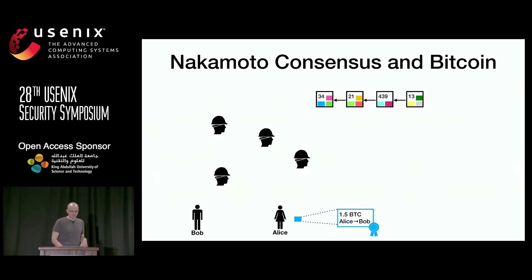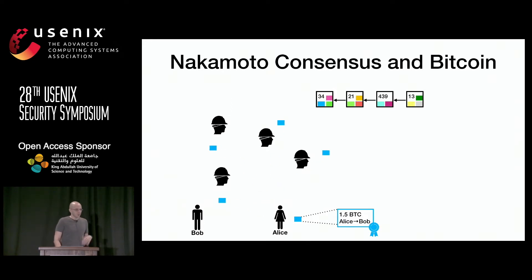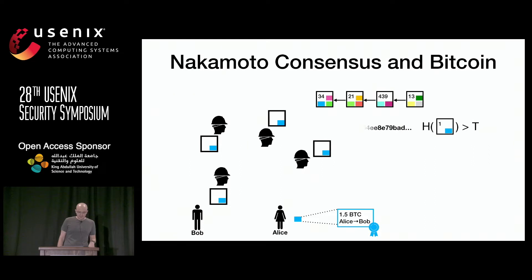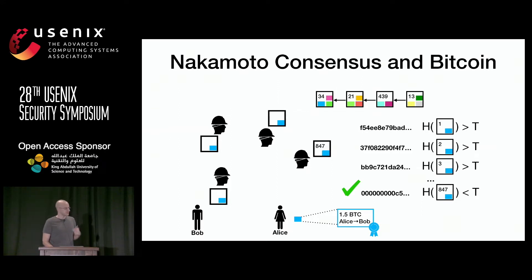I will start with an introduction of Nakamoto consensus and Bitcoin. What is great about this protocol is that you can explain it in a few slides. Whenever Alice would like to move some bitcoins to Bob, she creates a transaction, signs it, and broadcasts it to the network of consensus nodes, which are called miners. Miners collect transactions and try to create a block by finding one whose header satisfies a hash inequality — that is, the hash of its header is less than some predefined target.